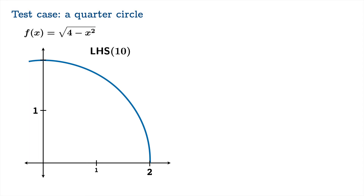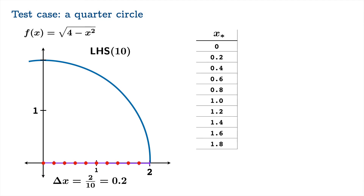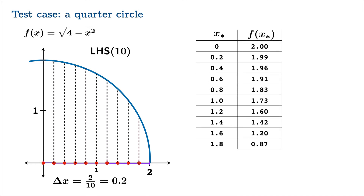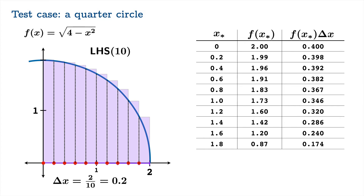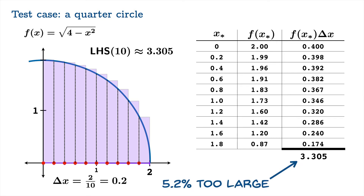Let's take a left-hand sum with 10 divisions. We chop the interval from 0 to 2 into 10 divisions. The common width of each interval is 2 divided by 10, which equals 0.2. We use left-hand endpoints from 0 to 1.8, find the function values, take the product of width times height for each of the 10 boxes, and add that all up to get 3.305. Compared to pi, the actual area, this is about 5.2% too large.